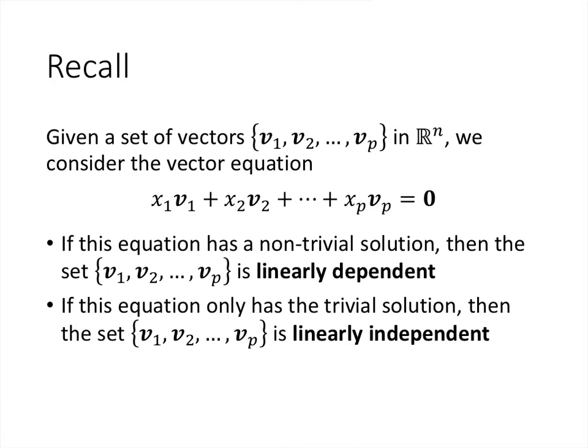Given a set of vectors, we think about the vector equation x1v1 plus x2v2 plus and so on through xpvp equaling the zero vector. If that equation has a non-trivial solution — any solution other than setting all the x's equal to zero — then we say the set is linearly dependent. But if the only solution is setting the x's to zero, then we say the set is linearly independent.